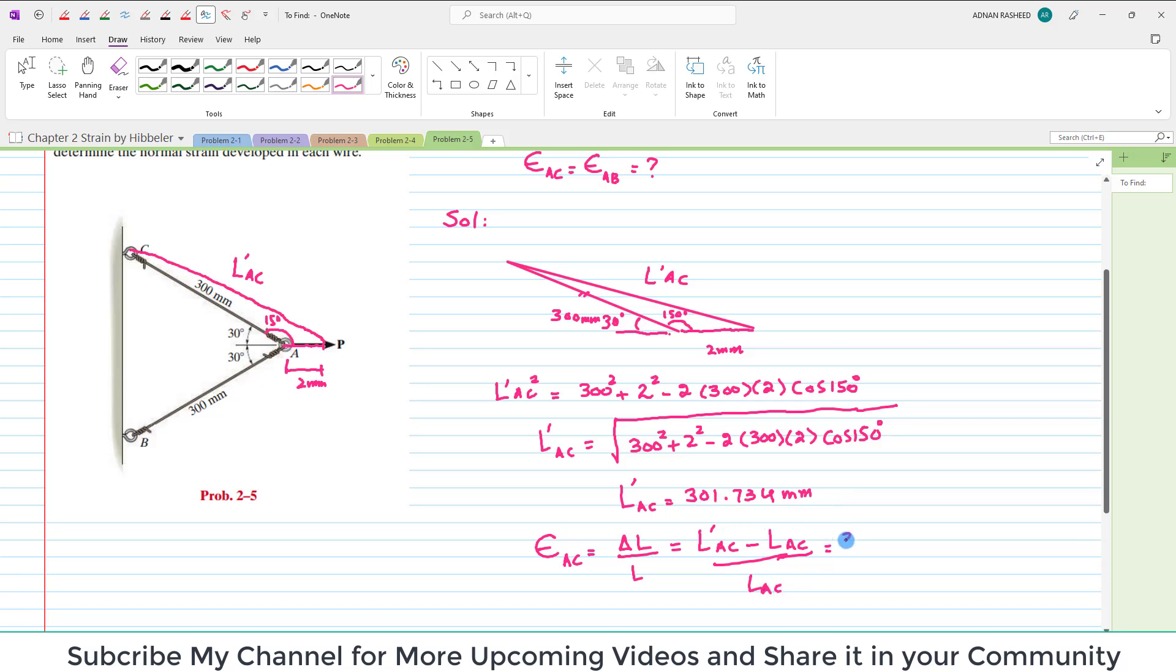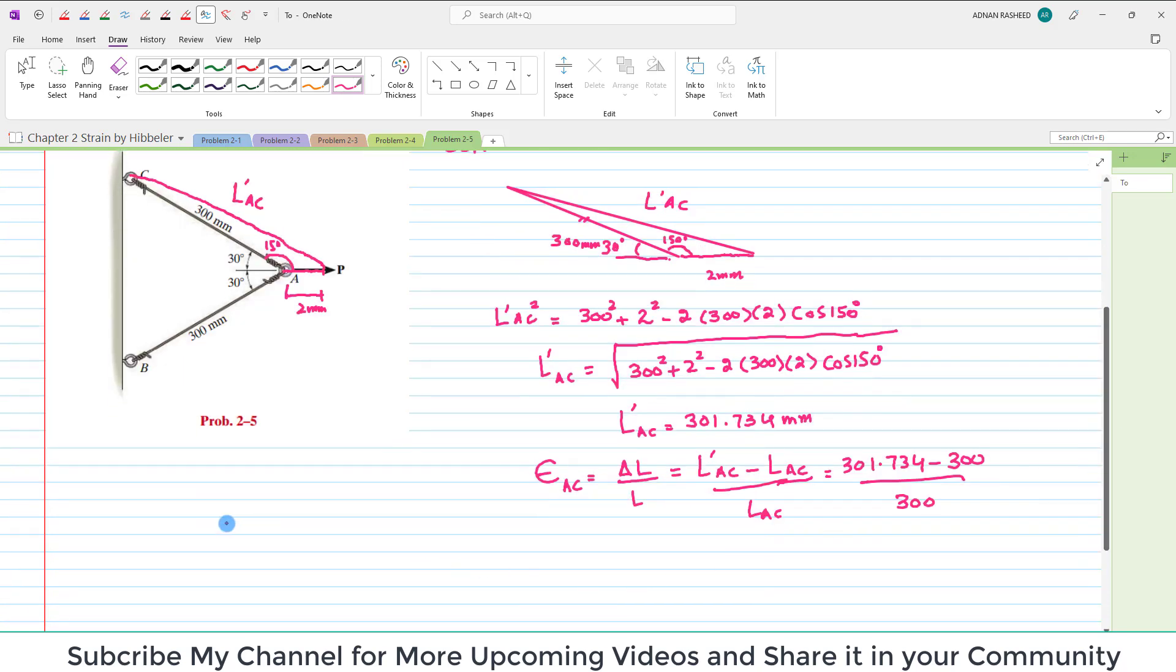So we will put the value 301.734 is new length minus 300 is original length divided by 300 which is original length. So when you solve this you will get strain in A C is equal to 0.00578 mm per mm.